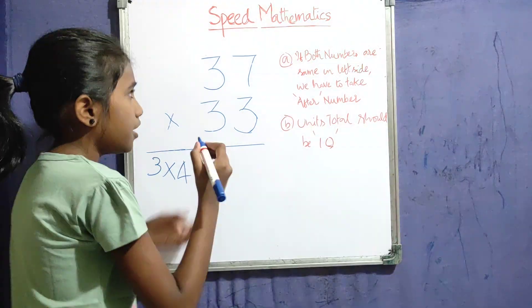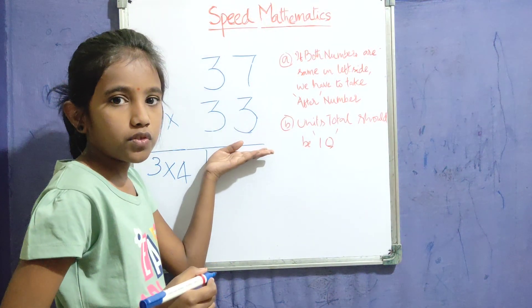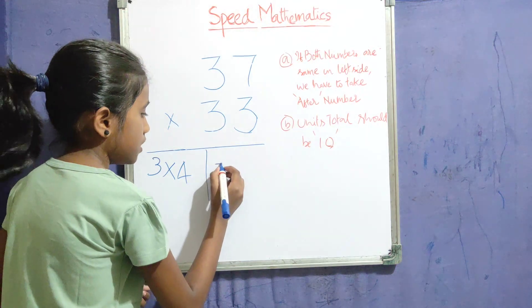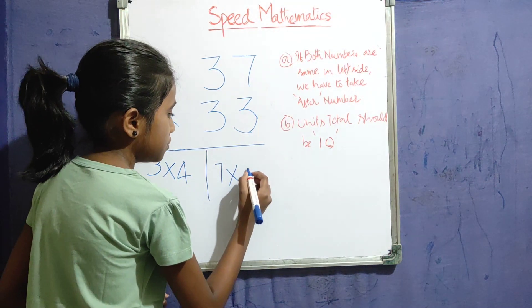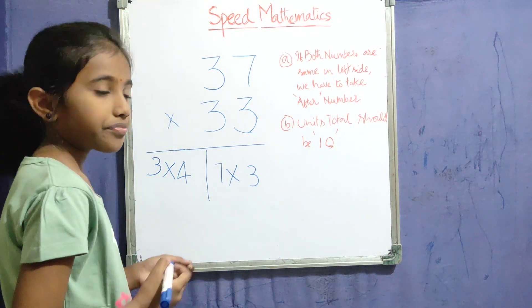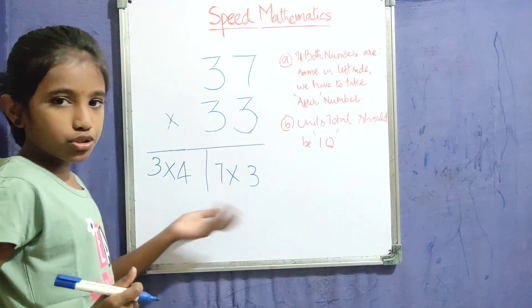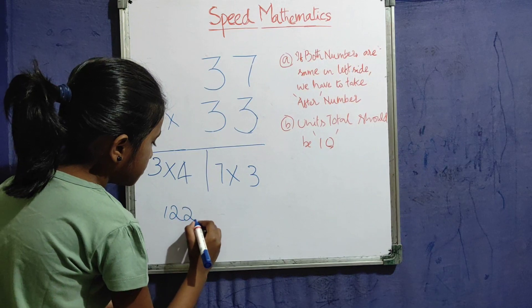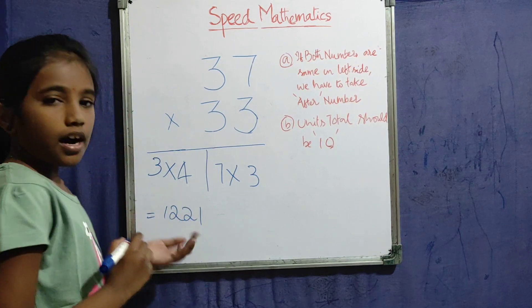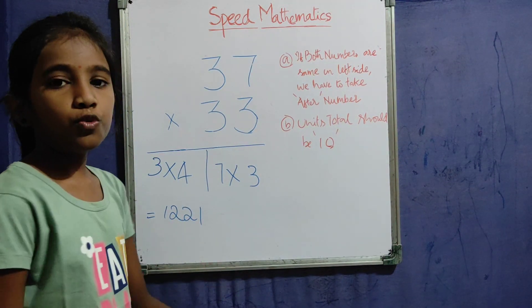3 into 4. Next, this 7 into 3, we have to write as usual. 7 into 3. Next, we have to multiply these two. The answer is 1221.